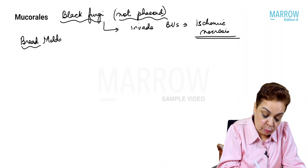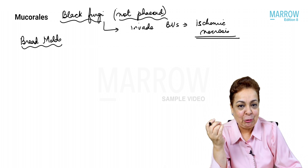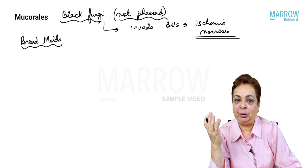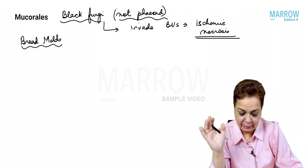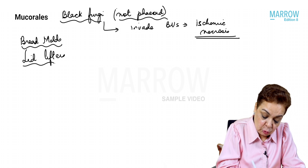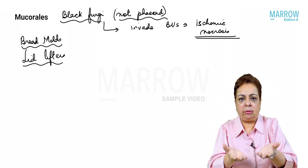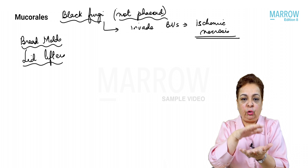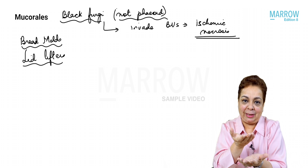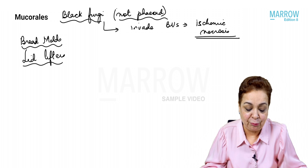Mucorales are also called bread molds because if you leave food outside — bread, rotting fruits, vegetables — the first fungi to grow on it will be Mucorales. They are also called lid lifters because their colonies are very woolly with aerial hyphae that gradually lift the lid of a petri plate.